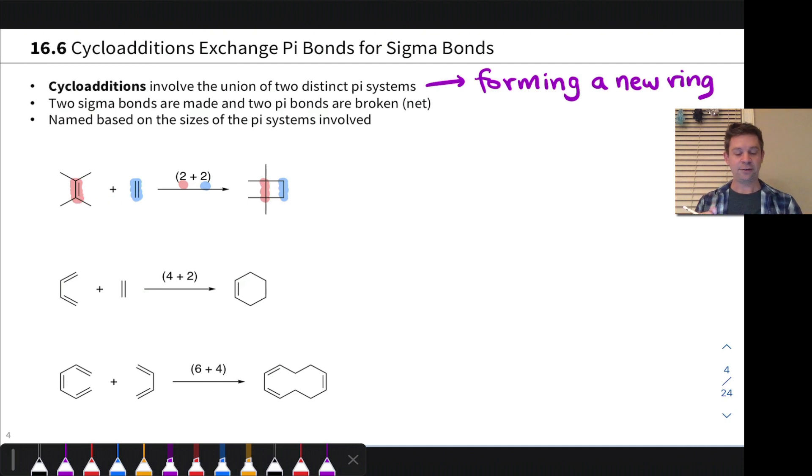In the second case, we have a four plus two cycloaddition where this four-atom pi system gets together with this two-atom pi system and we end up with a six-membered ring. Again, two new sigma bonds and notice that two pi bonds have been broken, the pi bond in the blue two-atom component and one of the pi bonds in the four-atom component.